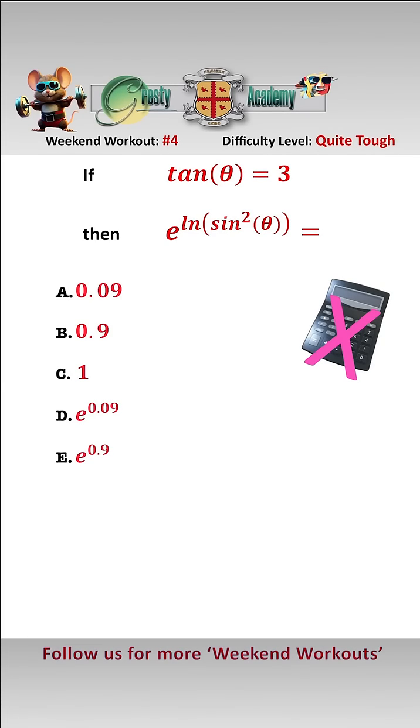This one's not quite as difficult as it looks, so let's have a look. If tan θ is 3, let's draw a right angle triangle. Therefore tan θ is 3, so that is 3 and that is 1, and here is θ.